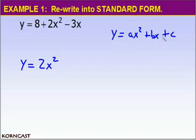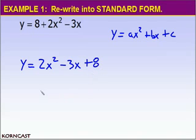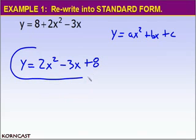So we're going to start by writing y equals 2x squared. Our next term is our x term. In our example, our x term is negative 3x, so we're going to subtract 3x from 2x squared. Finally, the last term in our standard form is our constant term. The constant term in example one is a positive 8. So we add 8 to our equation and y equals 2x squared minus 3x plus 8 is our equation rewritten in standard form.